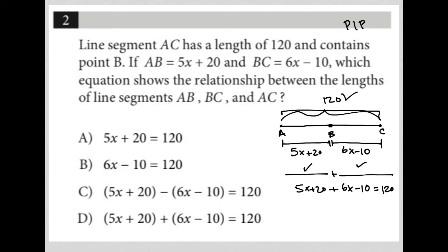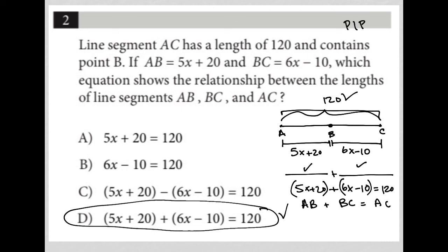Looking at the answer choices, they're using parentheses — which I should have used too. That's the AB part, this is the BC part, and we know that AB plus BC is equal to AC. So our answer here must be choice D.